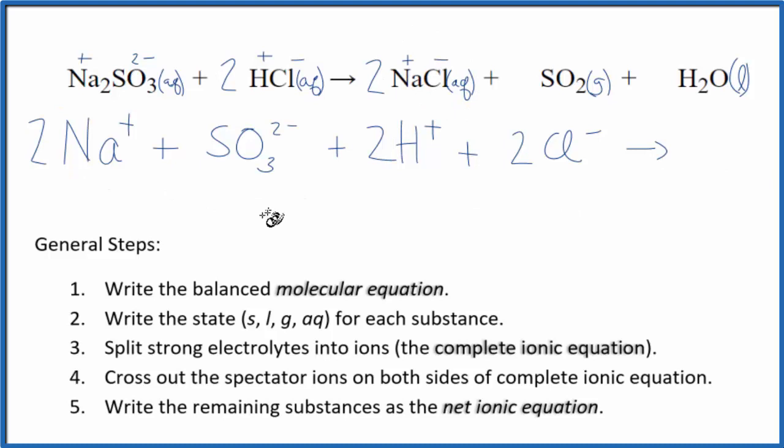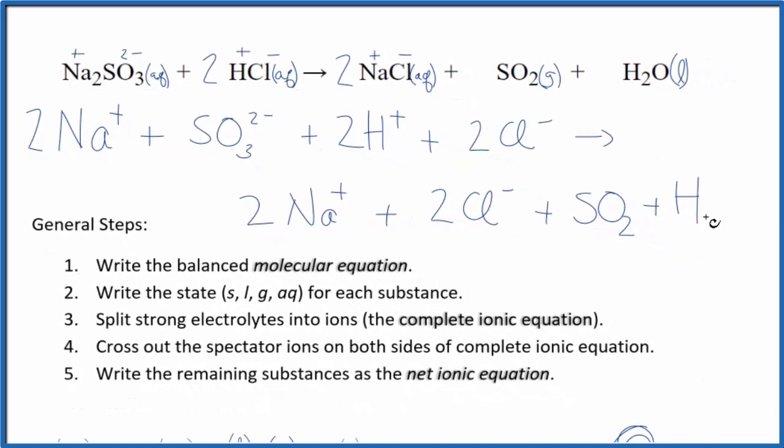For the products, we have 2 of the sodium ions, Na plus. Plus, we have the 2 chloride ions. And then we're not going to split the SO2 or the H2O apart. We only split apart the ones with aqueous, the strong electrolytes. So we're just going to put SO2 plus H2O.